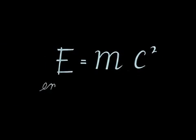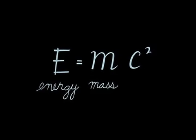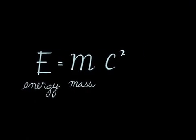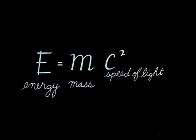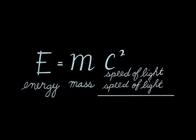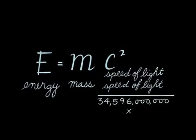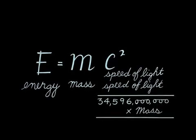E stands for energy, M for mass, and C squared is the speed of light multiplied by itself. Now, C squared is a very great number. And so, if multiplied by even a small mass, the result will be a very great amount of energy.